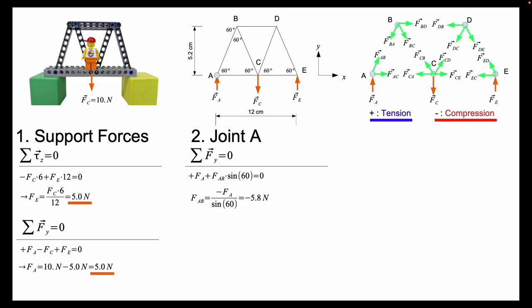Therefore plus my force A plus my force AB sine of the angle which was 60 must be zero. I solve this for the force AB and I get minus 5.8 newtons.